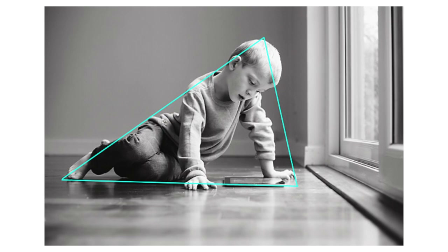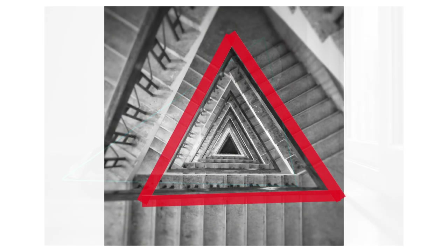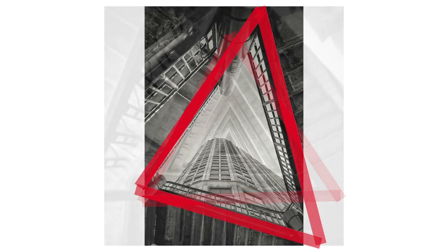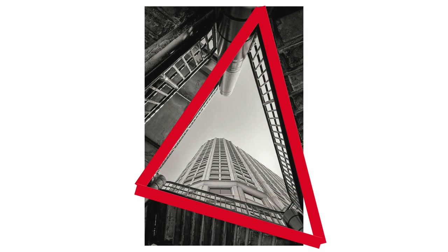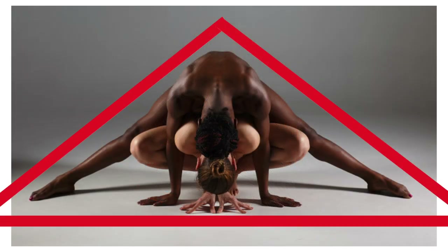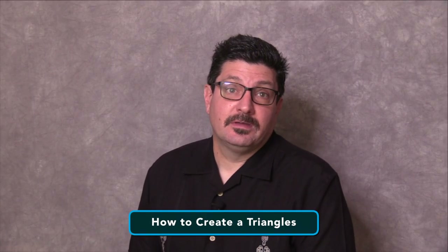Triangles are a great way of grouping together three points of a photograph or a scene and organizing them to portray a certain feeling, such as stability, aggression, instability and more. When you understand this, you can use them as invisible features of a photo or scene to evoke strong feelings in the viewer.